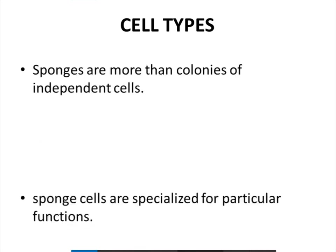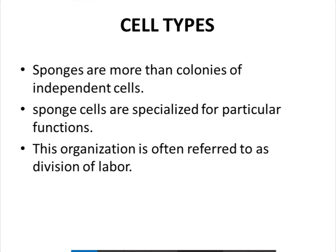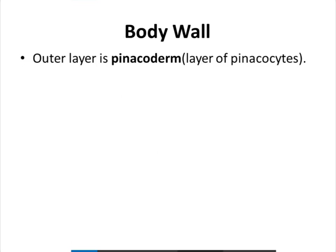Sponges are more than colonies of independent cells — they are specialized for particular functions. Every cell has a special function to perform, and this organization is referred to as division of labor. The sponge is multicellular, and every cell is responsible for its own function, which collectively is known as the division of labor.